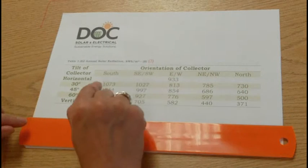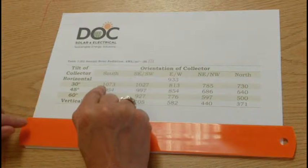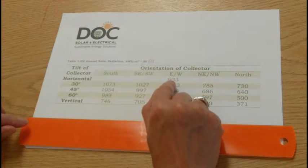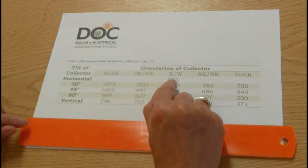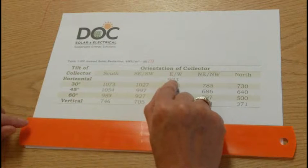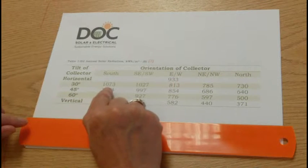But north, as you can see, is about 70% of south, and the horizontal collector will give you 933 kilowatt hours per meter squared. That is about 90% of what you would get on south.